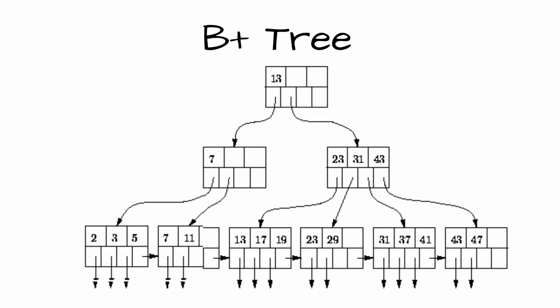The major advantages of using the B plus tree is the height of the tree remains balanced and less as compared to the B tree and faster search queries as the data is stored only on the leaf nodes.